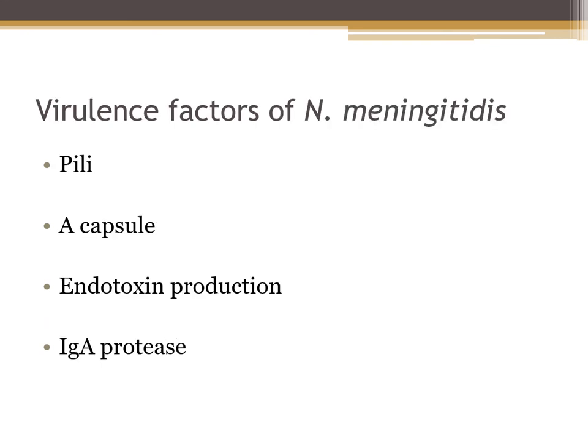There are several virulence factors associated with Neisseria meningitidis, including pili — hair-like filaments that aid in attachment to mucosal surfaces. It also has a capsule, which is the major virulence factor. Some strains are encapsulated with a polysaccharide capsule, which allows us to serotype 13 strains of Neisseria meningitidis. It also produces endotoxins and IgA protease, which affects the host's secretory IgA antibody.